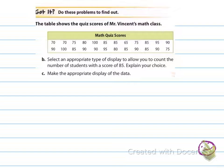Now you're going to try this on your own. The table shows the quiz scores for Mr. Vincent's math class. Select an appropriate type of display to allow you to count the number of students with a score of 85. Explain your choice, then make the appropriate display of the data — make sure you're giving the titles and doing things appropriately. My first thought was a box plot, but that's not going to tell me how many kids have specifically 85. Then I thought a histogram because that gives us ranges, but again that won't tell you how many have exactly 85. If it said more than 85, that would be a good one, but it's exactly 85.